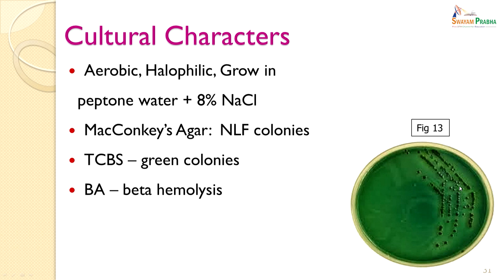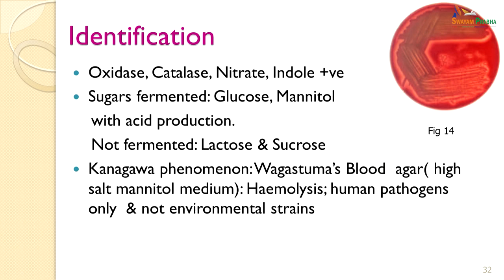On blood agar, it gives beta haemolysis. Identification of Vibrio parahaemolyticus is by the oxidase, catalase and nitrate tests, which are all positive. It is also indole positive, just like Vibrio cholerae. It ferments sugars — glucose and mannitol — with acid production. It does not ferment lactose and sucrose. Typically, strains which infect man are haemolytic — known as the Kanagawa phenomenon — and can be demonstrated on Wagatsuma's blood agar. As seen here, there is a clear zone of haemolysis around the colonies; this only occurs with human pathogens. In environmental strains, this clear zone of beta haemolysis will not be seen.